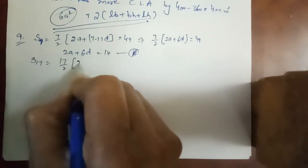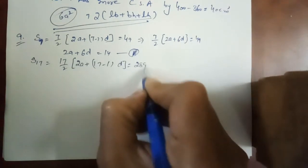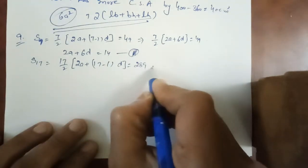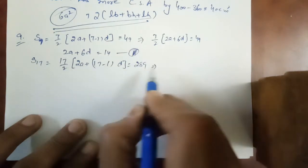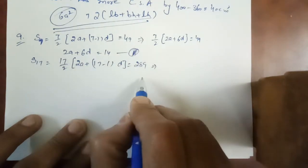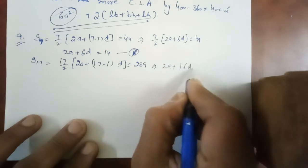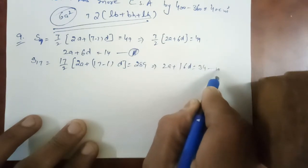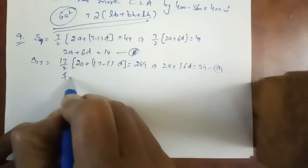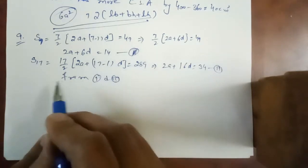Next is given to us sum of 17 terms: 17 by 2, 2A plus 17 minus 1 into D is equal to 289. It will be 17 by 2 on the right side multiplied by 2 divided by 17. 2A plus 16D is equal to 34.